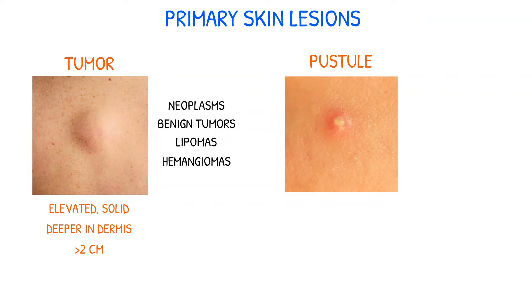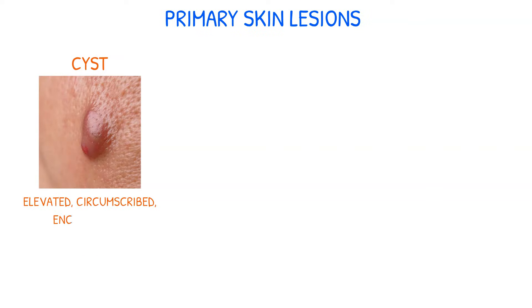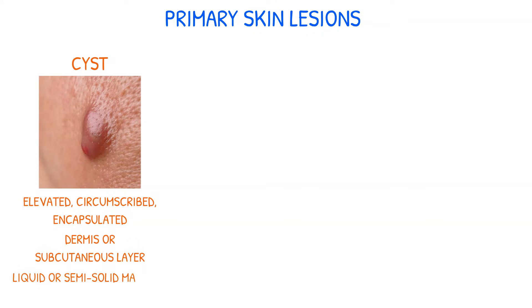A cyst is a circumscribed, encapsulated lesion that's in the dermis or subcutaneous layer and is filled with liquid or semi-solid material. Some examples of cysts include sebaceous cysts and cystic acne.